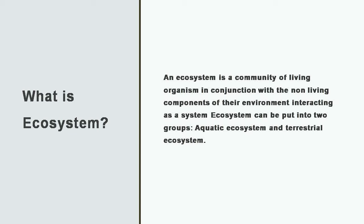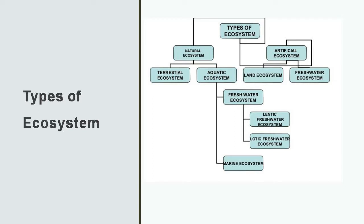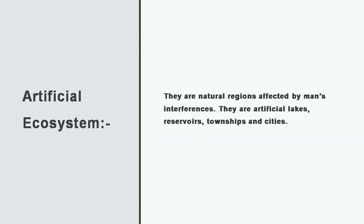Aquatic ecosystem is an ecosystem which is concerned with water, and terrestrial ecosystem is concerned with land. These ecosystems are broadly categorized into natural and artificial ecosystems. In natural ecosystems, we have aquatic and terrestrial. In aquatic, we have two categories: freshwater ecosystem and marine water ecosystem.